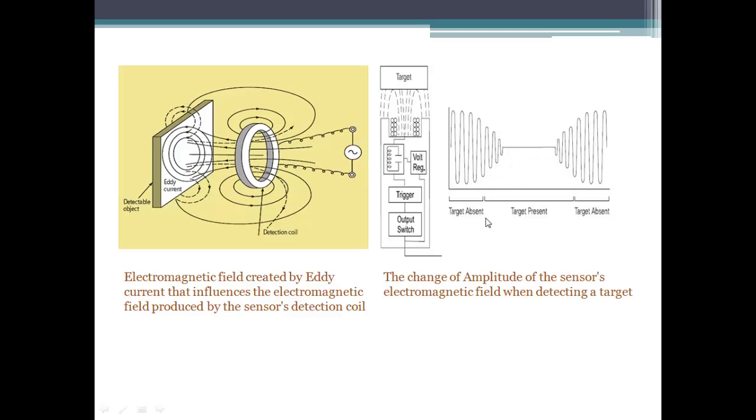The trigger circuit will monitor the amplitude of the field. When the amplitude gets low to a certain level, it will trigger the output circuit. This is how an inductive proximity sensor detects a metal object.